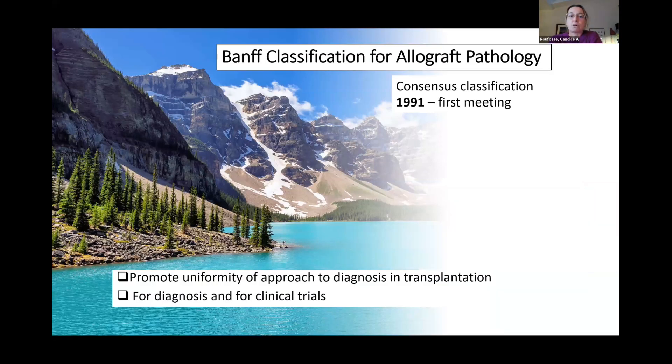So I'm sure most of you are aware that the Banff classification for allograft pathology was first developed in 1991 in Banff, Canada, hence the name. And this was a consensus of pathologists and clinicians and nephrologists and surgeons seeking to agree on a common way of classifying kidney transplant biopsies to promote uniformity in diagnosis, both for patient management and also for the purpose of clinical trials.